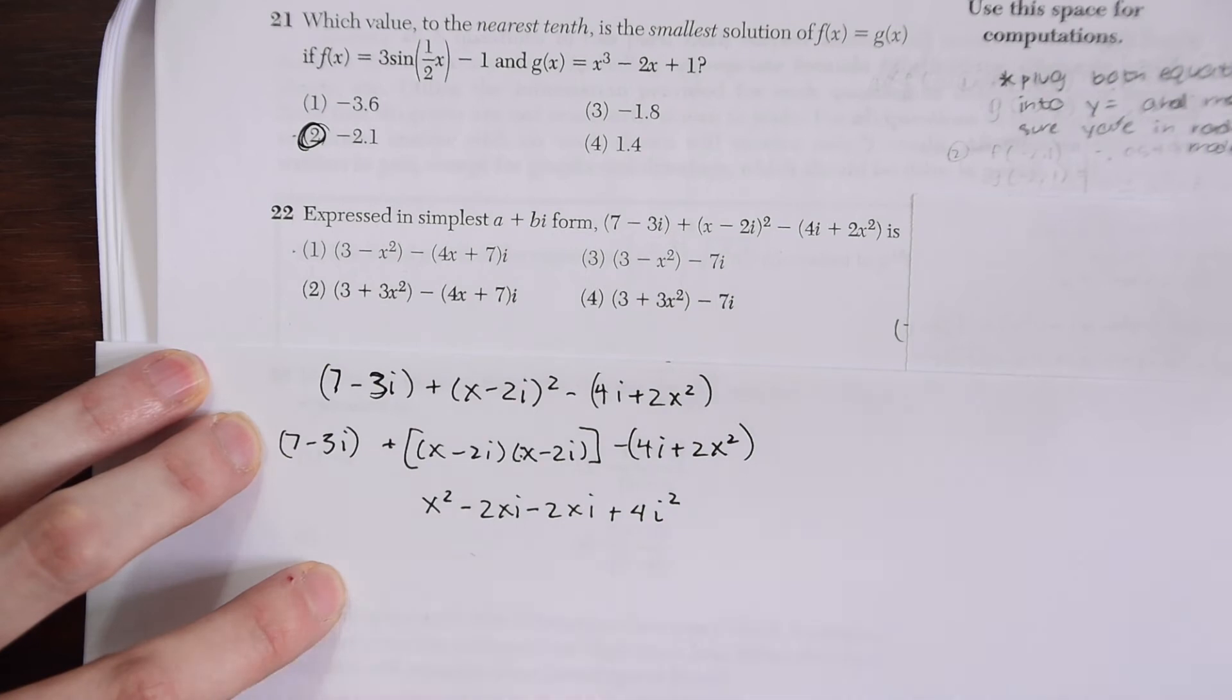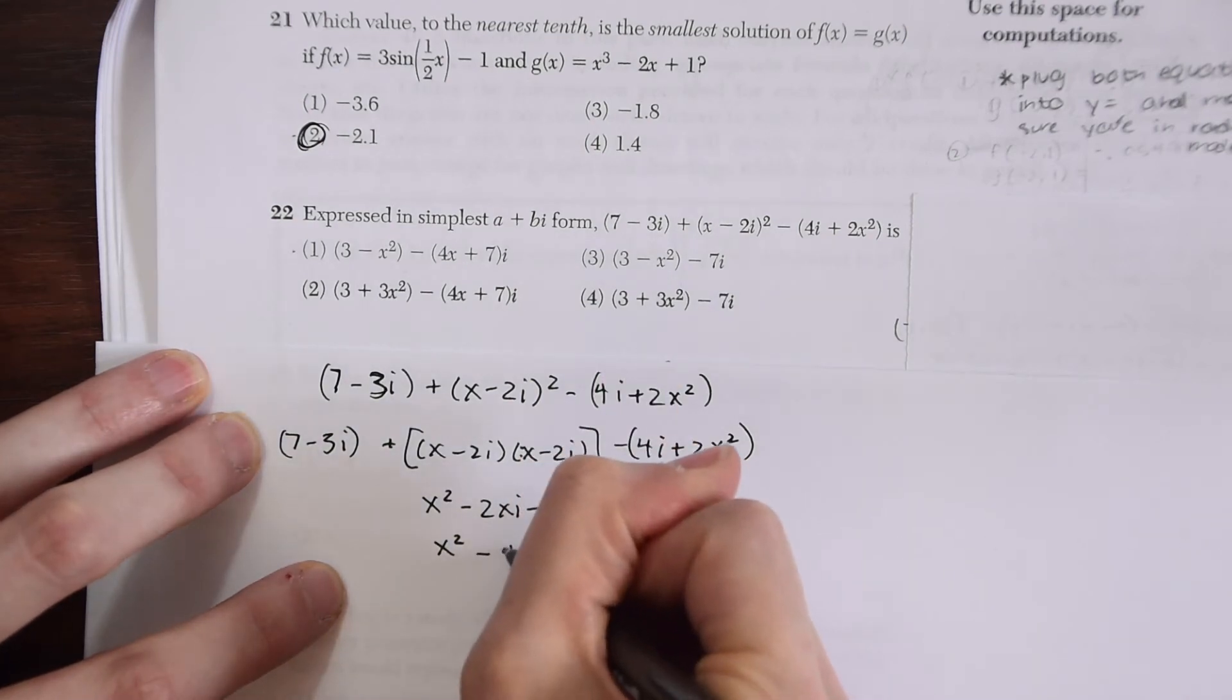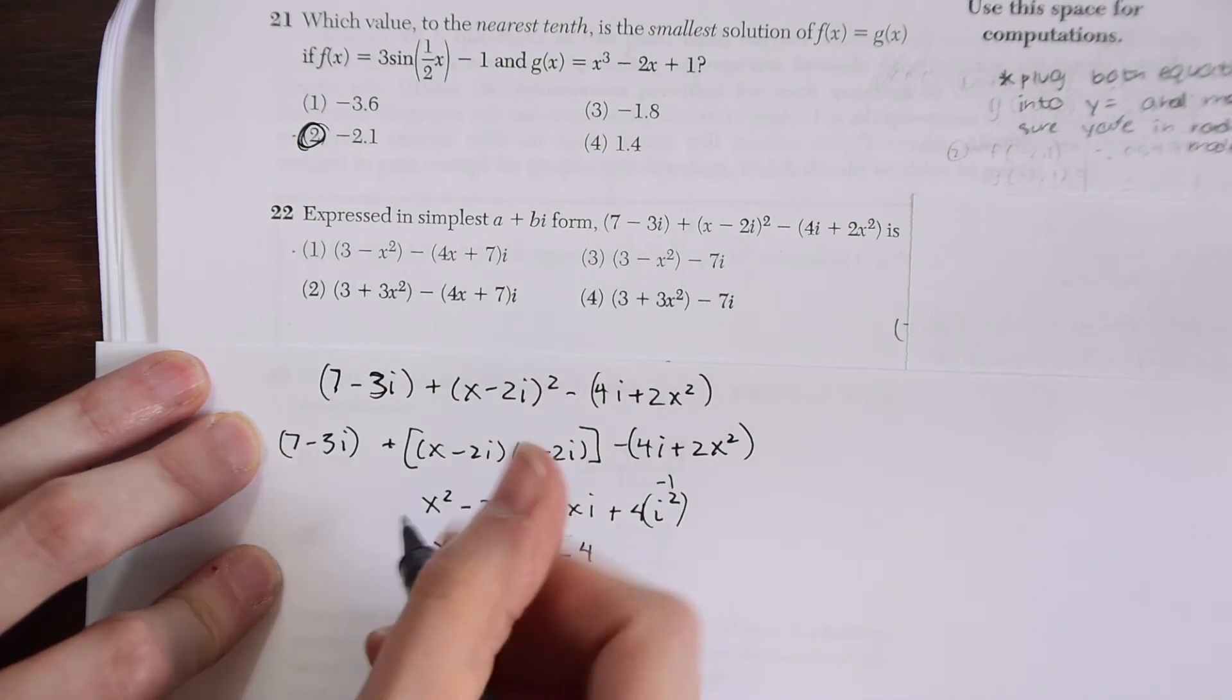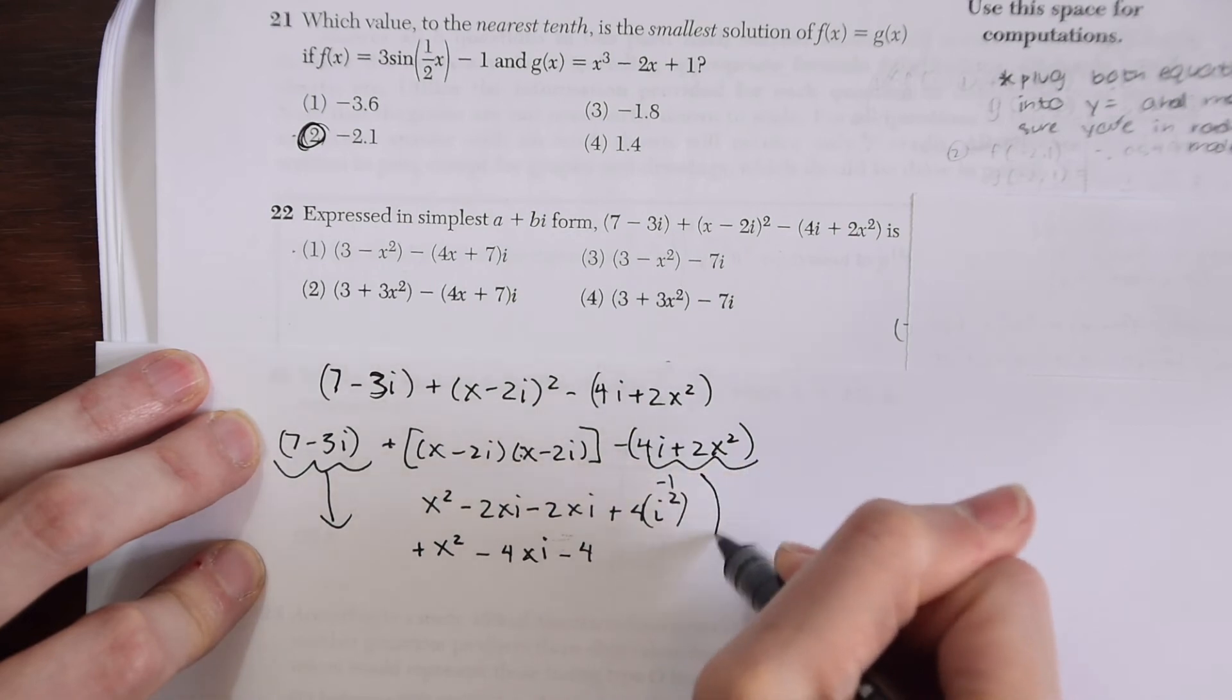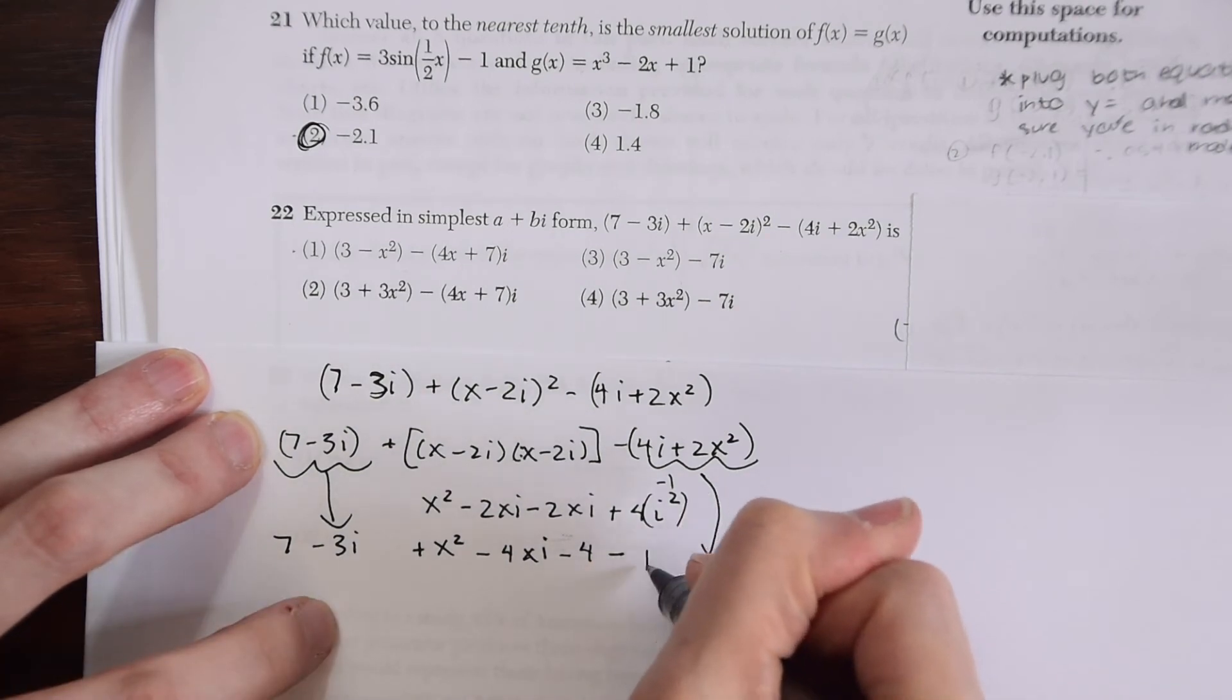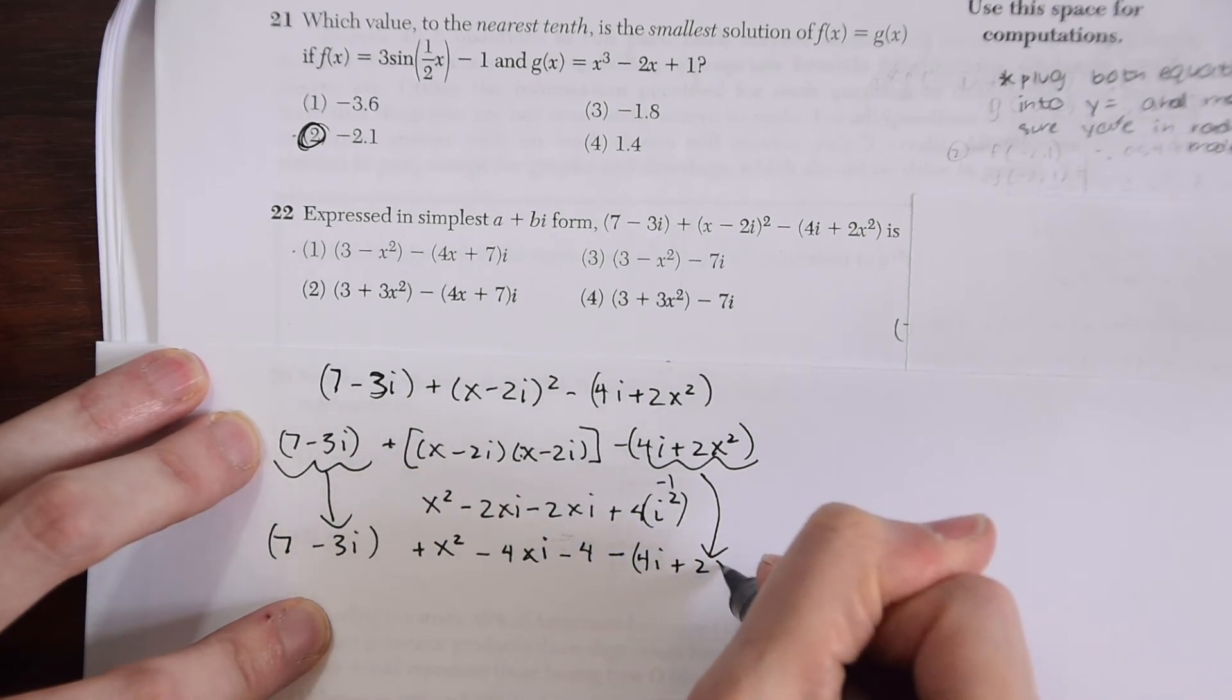Let's simplify this a bit more. x squared. We can combine like terms here, negative 2xi minus 2xi will just give us minus 4xi. And then remember, this i squared becomes a negative 1. So this really becomes minus 4. Now I'm just going to bring down the rest of what we had here. The leftover that wasn't part of our binomial—we haven't touched these, we're just bringing them back down. We have 7 minus 3i over on this side, and minus (4i plus 2x squared).